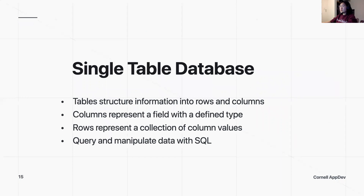So far we've only interacted with single-table databases. As a quick reminder, table structure organizes information into rows and columns, just like what you would expect in an Excel sheet. Columns represent a field with a defined type, and rows represent a collection of column values — an entry in a table. And we can query and manipulate data with SQL.